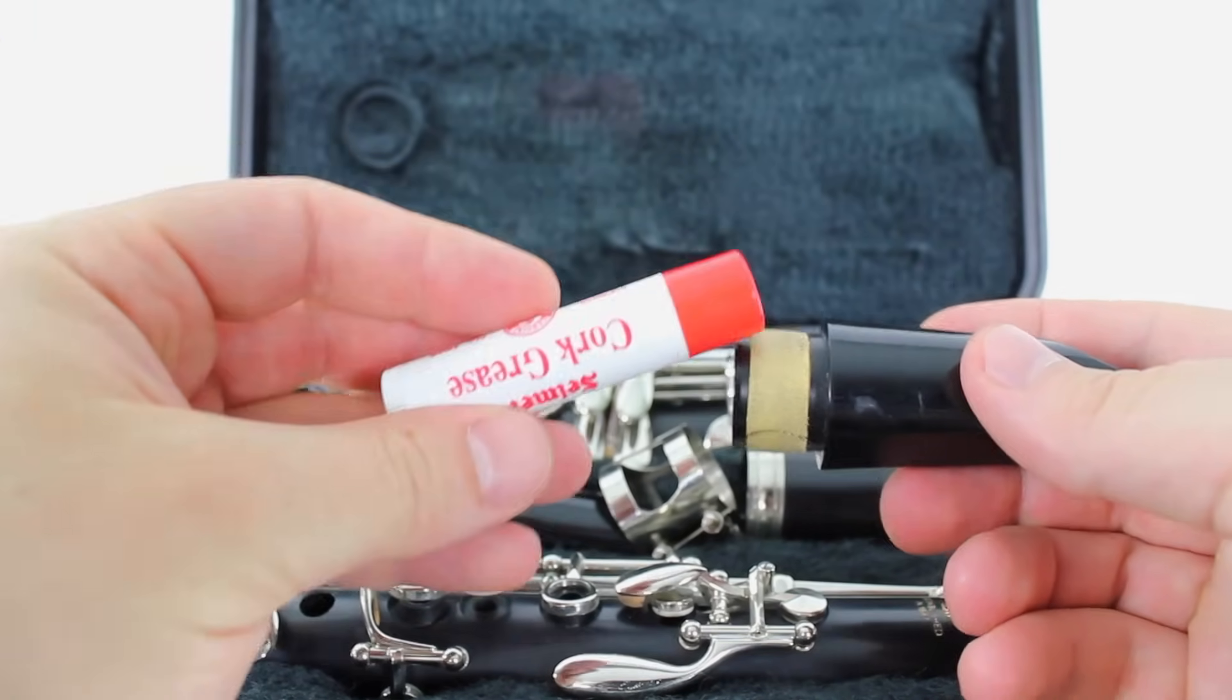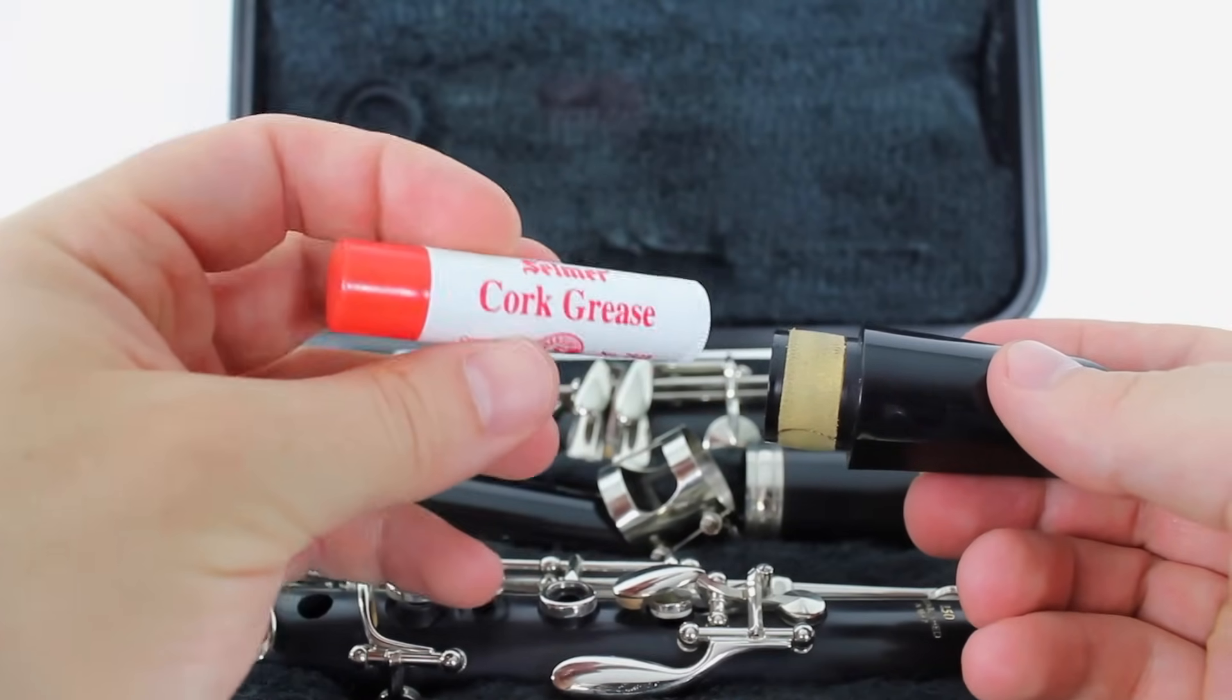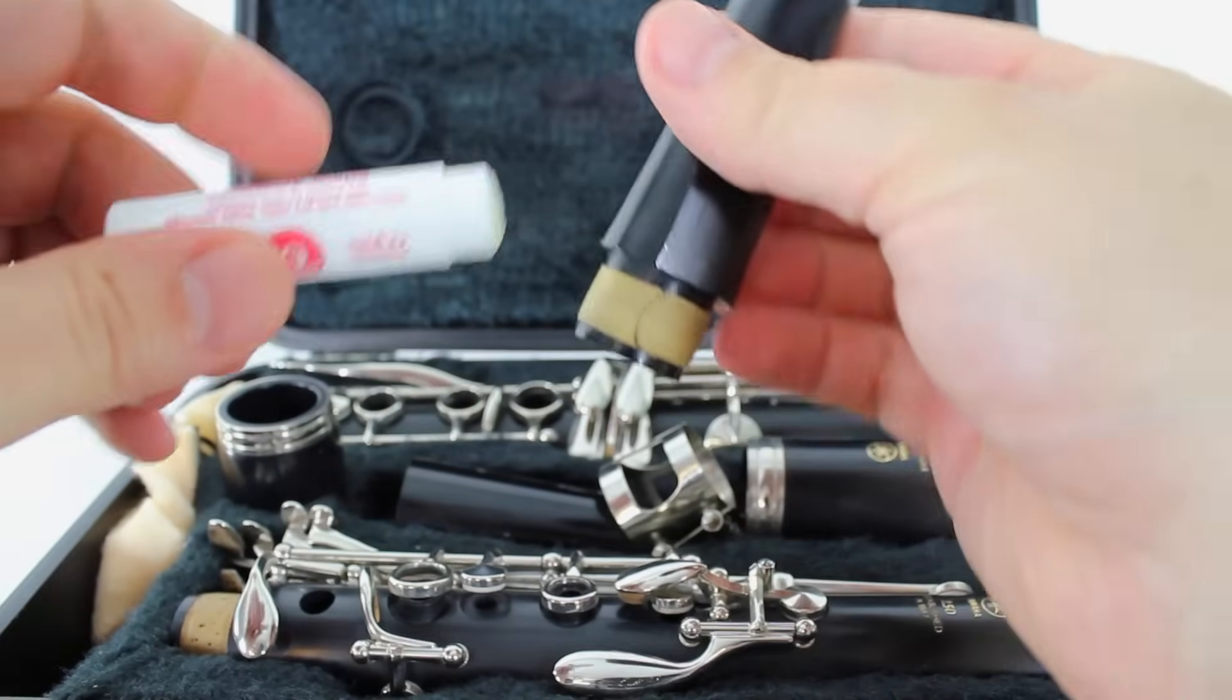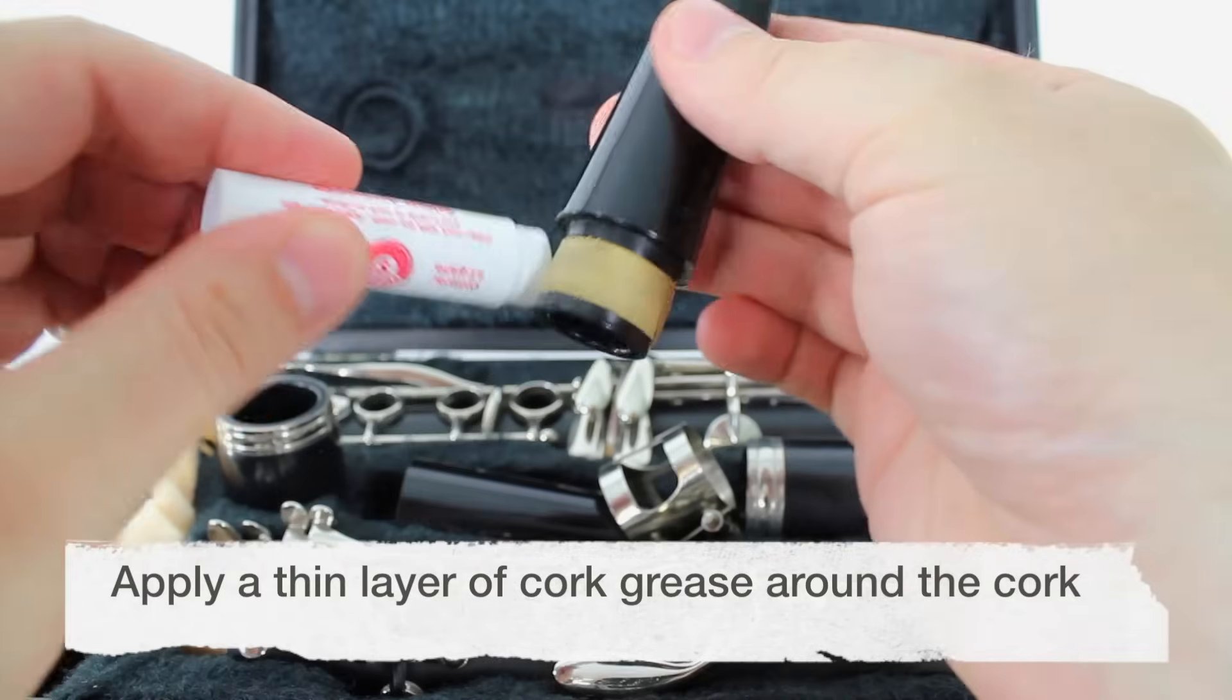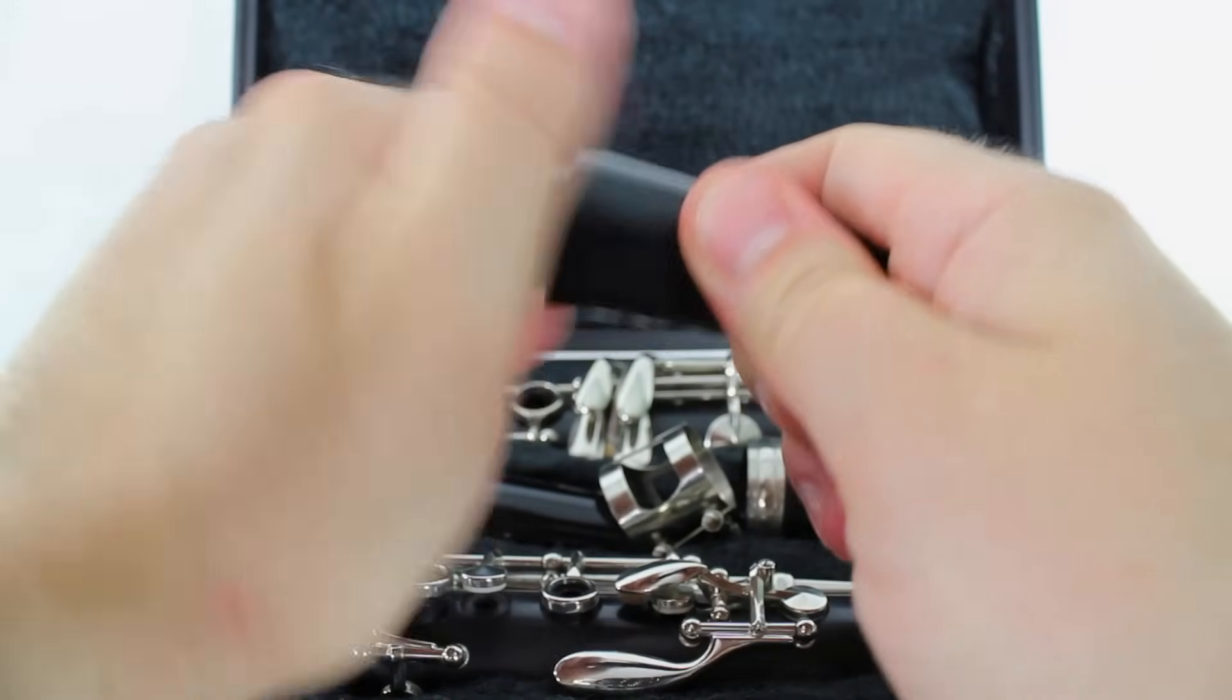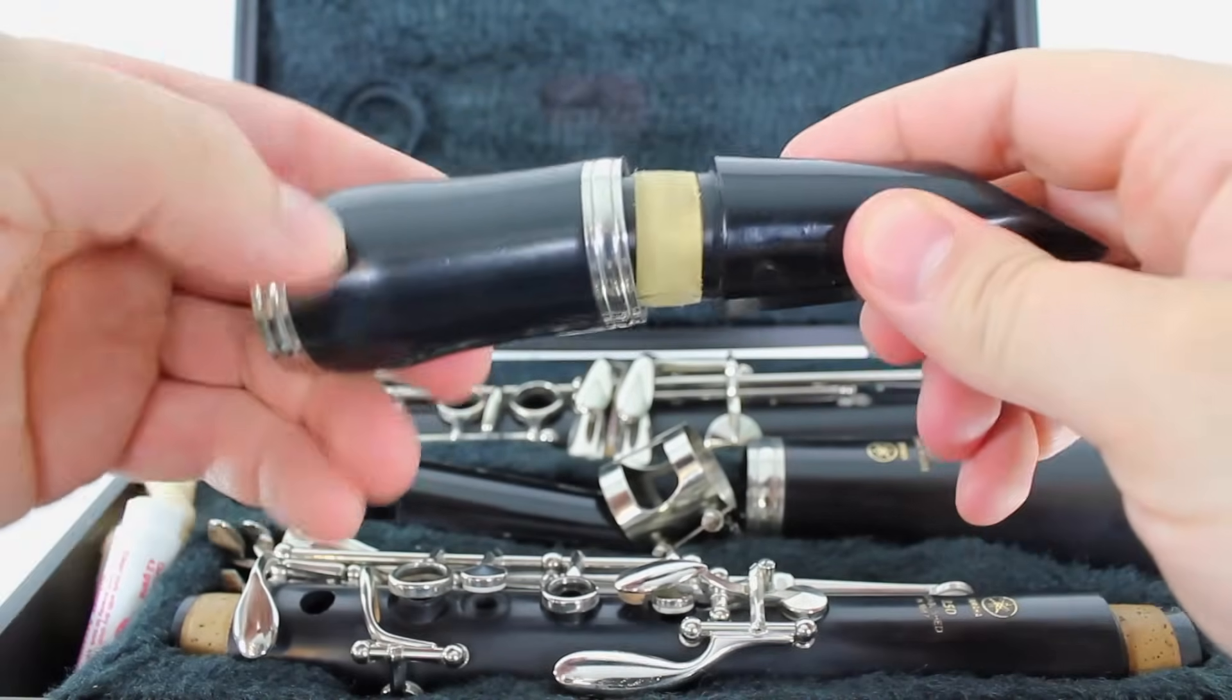Here is our cork grease. And it kind of looks like a tube of chapstick, but it's not chapstick, so don't put it on your lips. We're going to take the cap off and just put the cork grease around the cork, all the way around the cork, and rub it in with your fingers. And then you'll find that it's easier to put these two parts together.